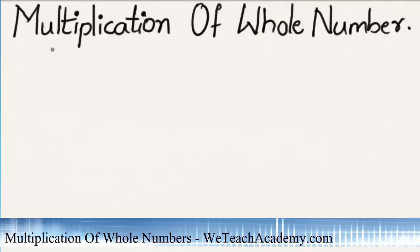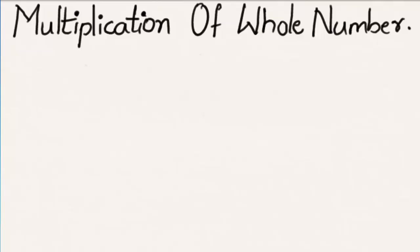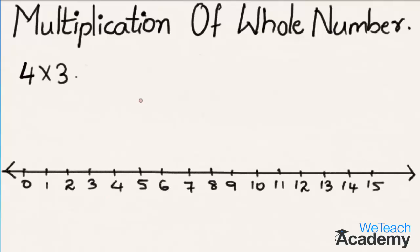Hey guys, welcome to vteachacademy.com and here in this presentation we are going to discuss multiplication of whole numbers. Now let us see how to multiply 4 with 3 on the number line. So here there is a number line from the number 0 to 15. To multiply 4 with 3, let us start from the number 0.